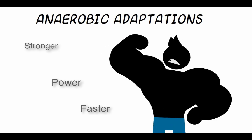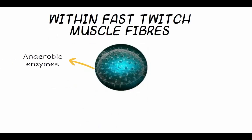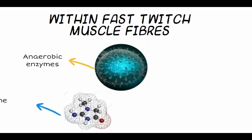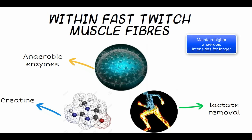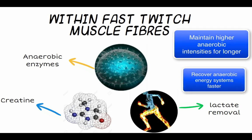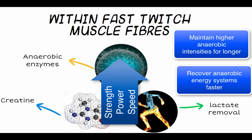Other adaptations that occur in type 2 fibres include an increase in anaerobic enzymes for glycolysis, increased creatine levels, and faster lactate removal, which helps decrease the acidic levels in the muscle. These changes result in the athlete being able to maintain higher anaerobic intensities for longer, recover the anaerobic energy systems faster, and increase their strength, power, and speed.